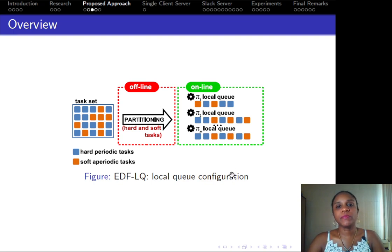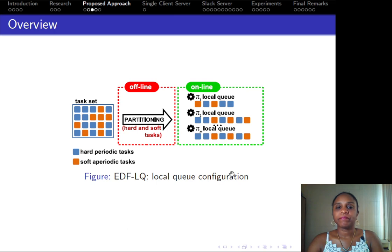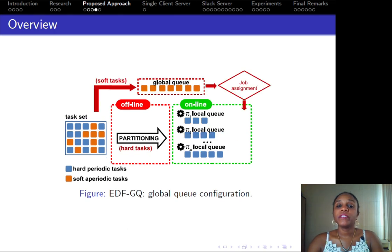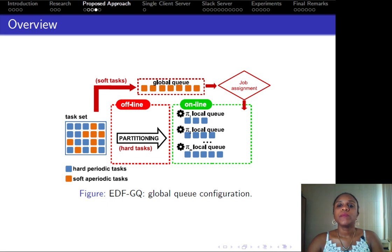Let's take a look at an overview of these approaches. In EDF-LQ, partitioning considers both hard and soft tasks. After partitioning, which occurs offline, tasks are assigned to processors and cannot migrate. In EDF-GQ, partitioning considers only hard tasks, which are assigned to processors and cannot migrate. For soft tasks, they are placed in a global queue and are assigned to processors at runtime, according to a specific job assignment procedure.